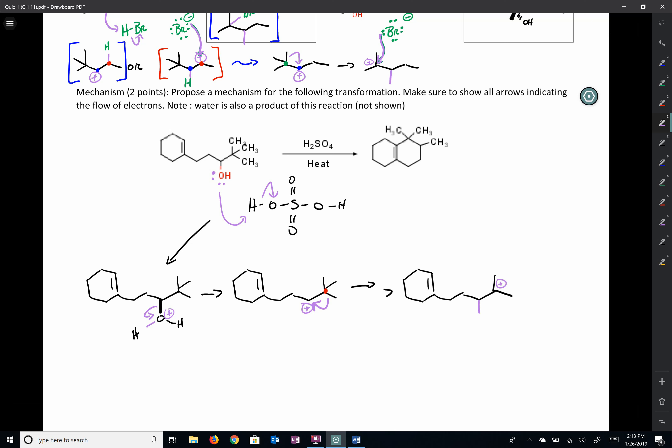Now we know we have to cyclize this. We know we have to cyclize this group. So if we start counting here in our carbocation, one, two, three, four, five, six. There's six carbons between that carbocation and my double bond.